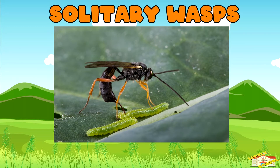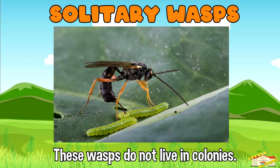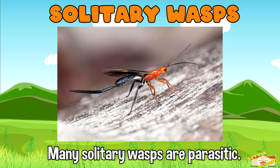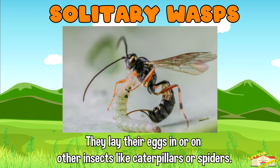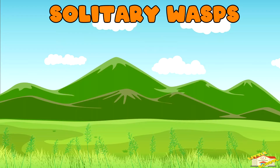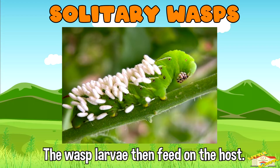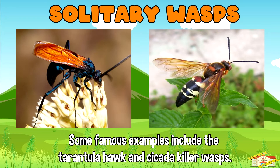Solitary wasps do not live in colonies. Each female works alone to lay eggs and care for her offspring. Many solitary wasps are parasitic — they lay their eggs in or on other insects like caterpillars or spiders, and the wasp larvae then feed on the host. Some famous examples include the tarantula hawk and the cicada killer wasp.